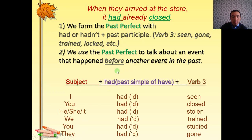Let's look at the form. Firstly, subject plus had. And had is the past simple of have plus verb 3. I had seen. You had closed. He, she, it had stolen. We had trained. You had studied. They had gone. Same for all pronouns. And 'd is the contracted form of had. I'd seen. You'd closed. He'd, she'd, it'd stolen. We'd trained. You'd studied. They'd come. But it's better to use the full form had.